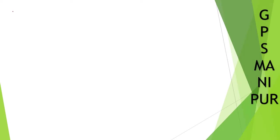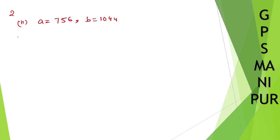Next question, question number 2. We have question number 2, Roman numeral 2, which is A equal to 757, A equal to 756, and B equal to 1044. Like the previous question — if you haven't watched, you can go and look at question number 2, Roman numeral 1. So like the previous question, we are going to find the prime factorization, the prime factors of this one.